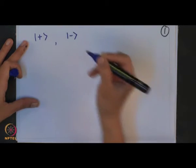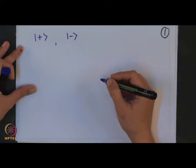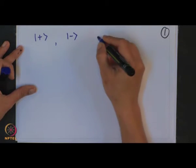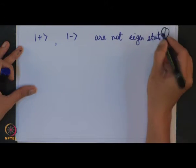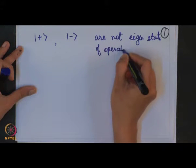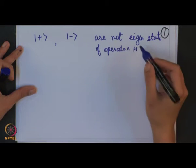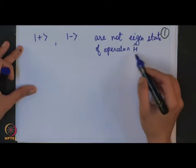Coming to tutorial 5, the first problem is interesting because here you are given 2 states of a quantum system. It has basis states ψ-plus and ψ-minus. These 2 basis states are not eigenstates of some given operator or Hamiltonian operator H.